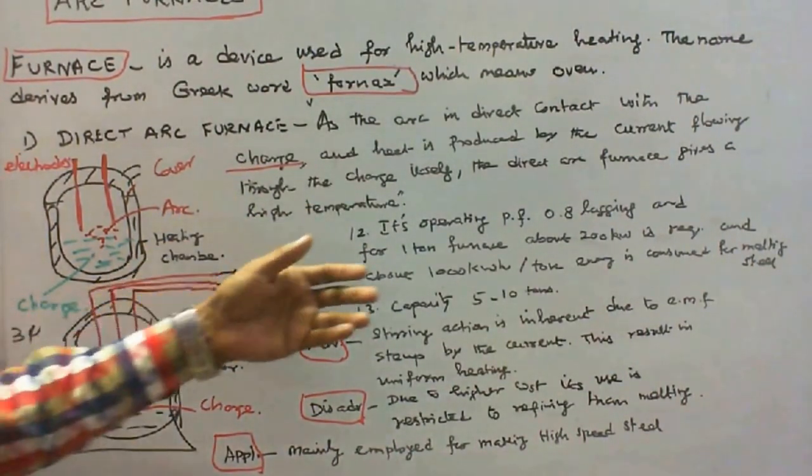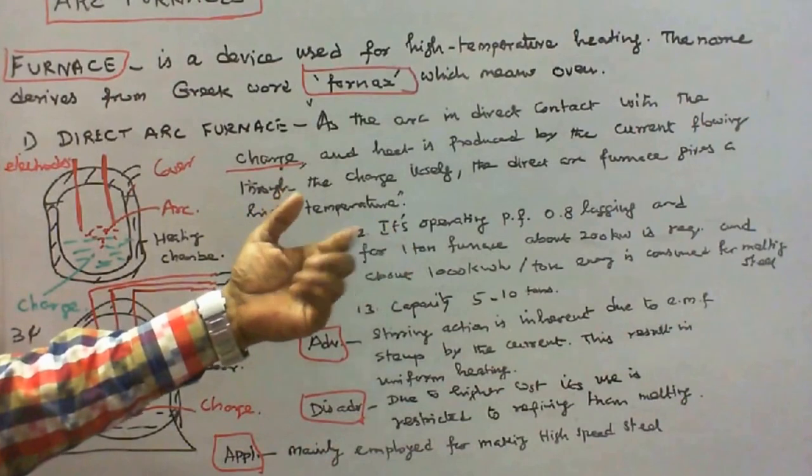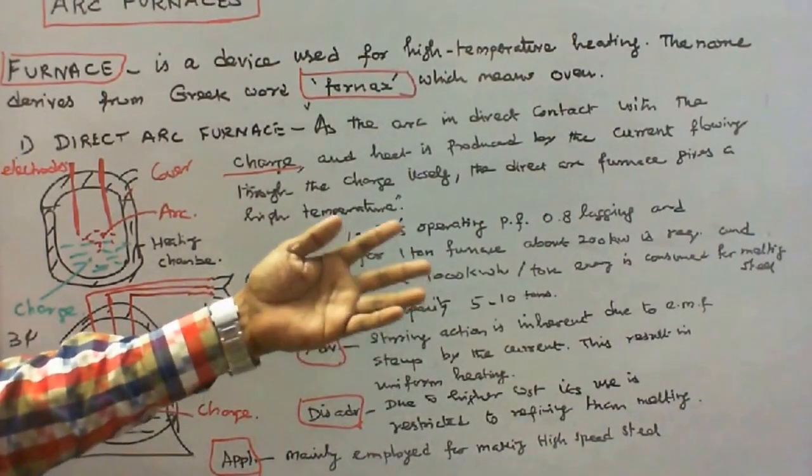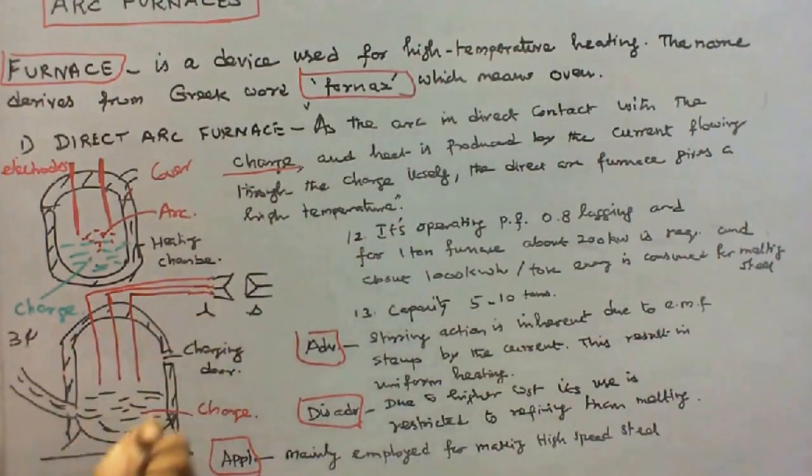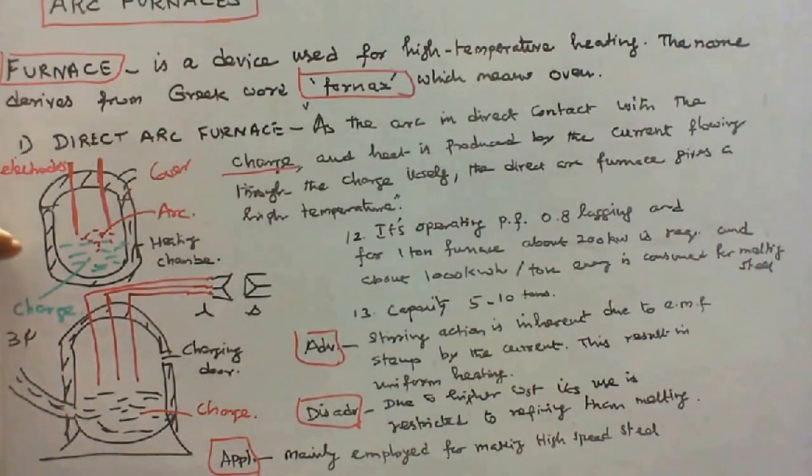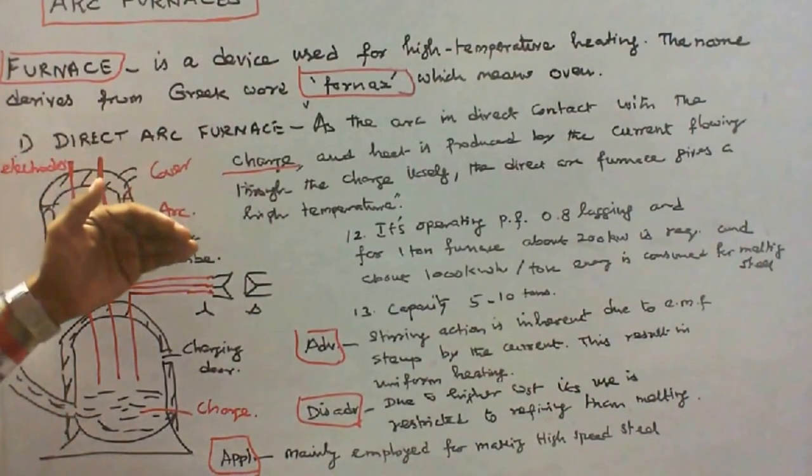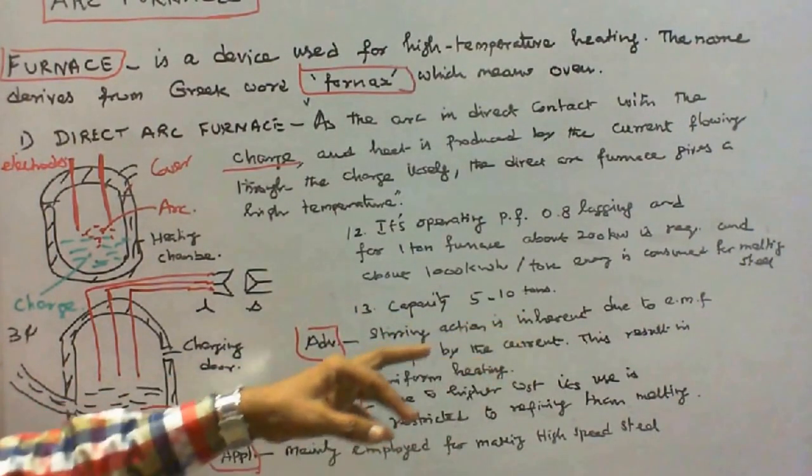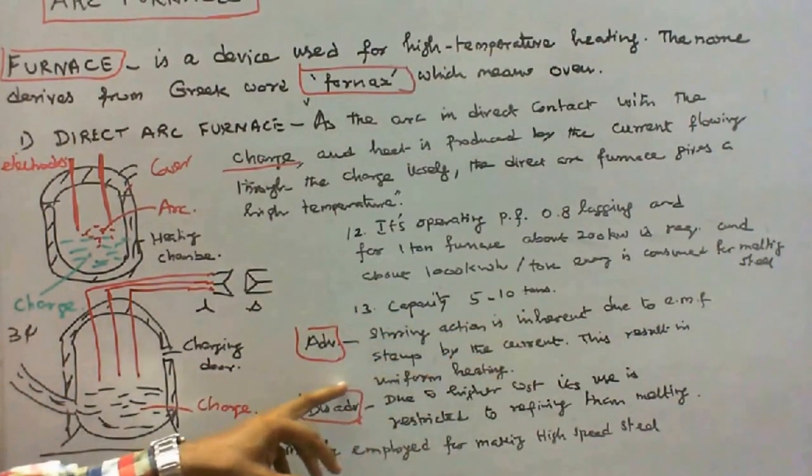And for one ton furnace, about 200 kW is required. About 1000 kWh per ton energy is consumed for melting steel. Its capacity varies from 5 to 10 tons. The main advantage of direct arc furnace is stirring action is inherent due to EMF set up by the current. This results in uniform heating.